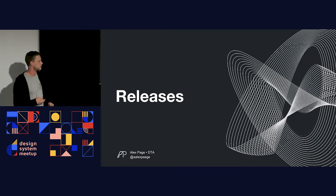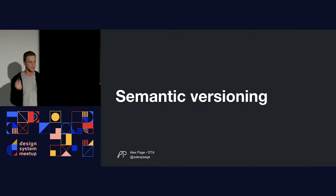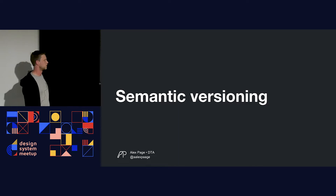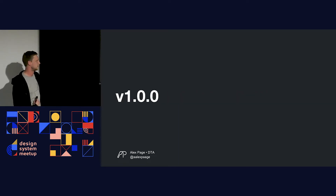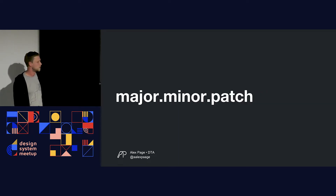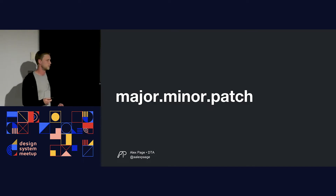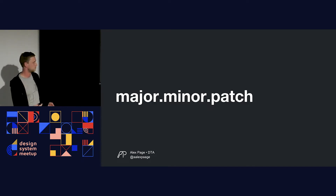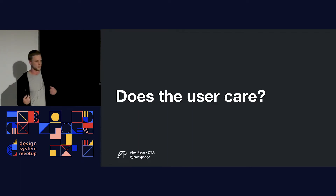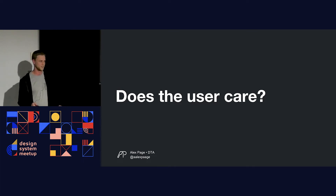Releases — this is a really interesting one. The common thing most developers would know is semantic versioning. That looks something like version 1.0.0, which translates to major, minor, patch. If I do a patch to a version 1 component, I increase the last number by 1 — so 1.0.1. A minor version increase would be 1.1.0. To me that makes a lot of sense. But the question I'd ask is: does your user care? In some cases they would — a developer needs to know if the button is version 2 or version 4.